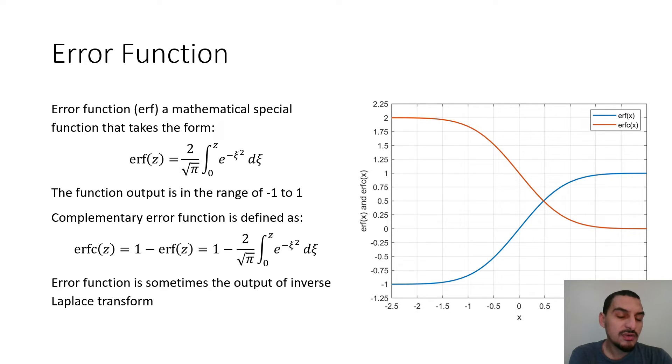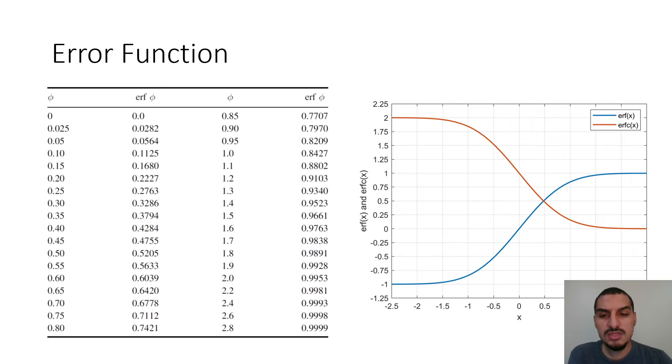If you want to get the value of an error function, you don't have to do this integration, because it's a well-known function, so you can either use this graph. So you go for any value of x, and then get the corresponding value of error function. But this is very tricky, especially if you're seeking a value in this region or in this region where the points or the slope is very, very small. So the change in the value of error function with x is very small, so it's easier to use tables like this.